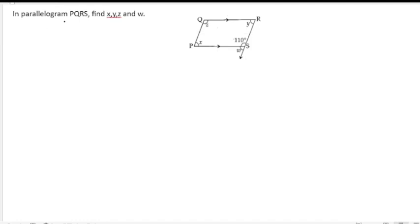In parallelogram PQRS, find x, y, z, and w. They have given this parallelogram and one of the angles is also given. So first we will focus on this angle w.